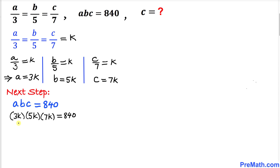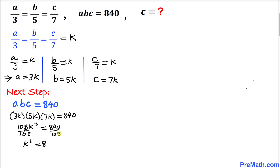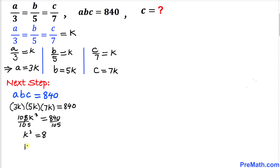Let's go ahead and multiply on the left-hand side. 3 times 5 times 7 gives us 105, so we get 105 k cubed equals 840. Let's divide both sides by 105 to isolate k cubed. This cancels out, so we get k cubed equals 8.